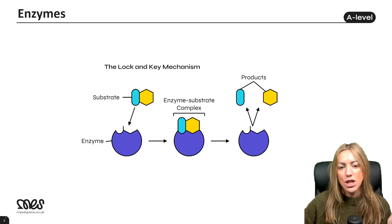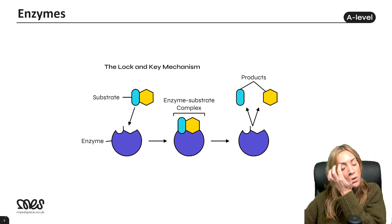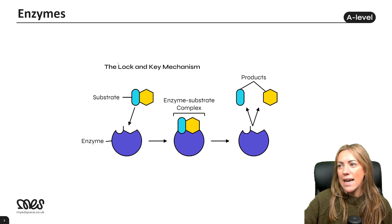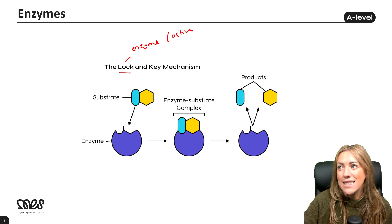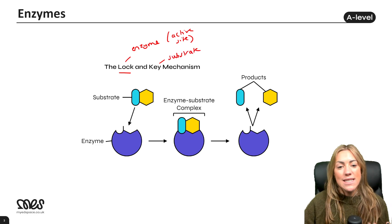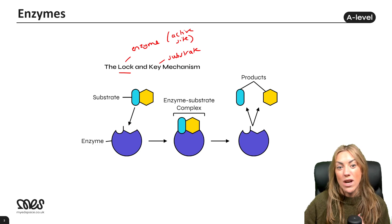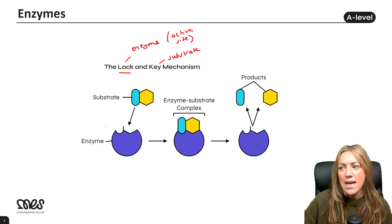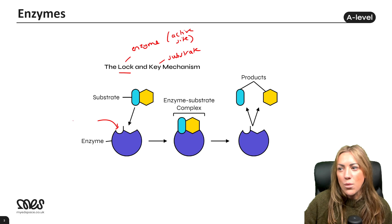At GCSE you learn about the lock and key model — the idea that the enzyme's active site is like the lock and the substrate is like the key. This conveys that the enzyme is specific to the substrate, just as a lock is specific to a key, and that the active site is complementary to the substrate.